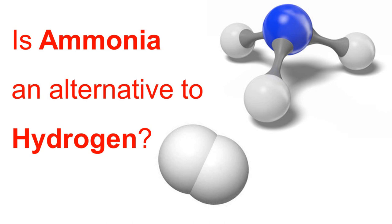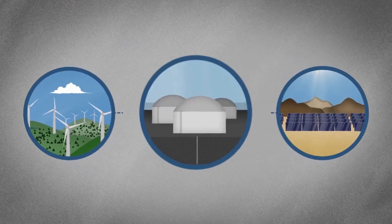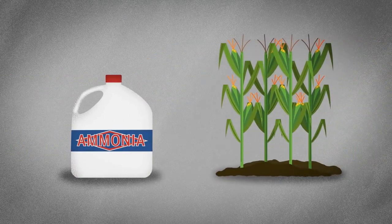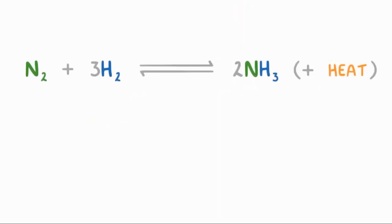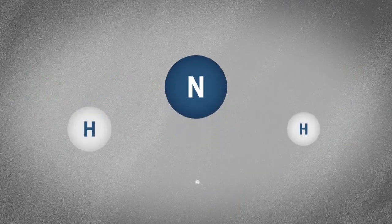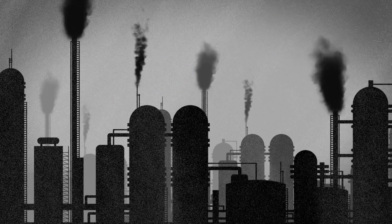This raises the question of whether ammonia instead of hydrogen could be used as a carrier of energy made from renewable sources, with special consideration of the energy efficiency of transcontinental transport. Already today, about 200 million tons of ammonia are produced worldwide every year, and about 75% of this is used for fertilizer production. The energy required for ammonia production corresponds to about 2% of the total global energy production. In the most commonly used production process — the Haber-Bosch process — nitrogen and hydrogen react with each other at about 200 bar and 450°C on an iron catalyst.